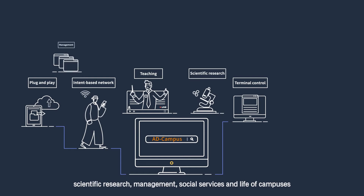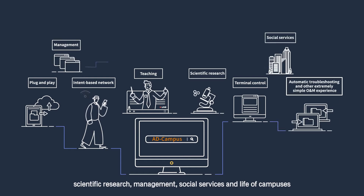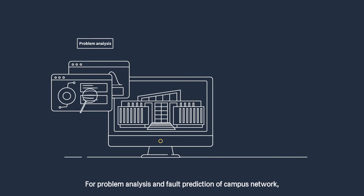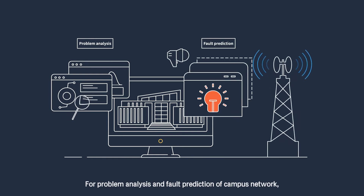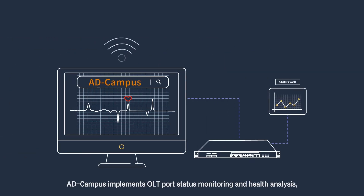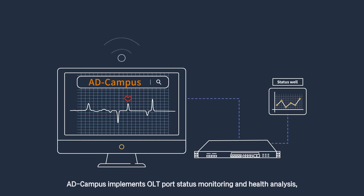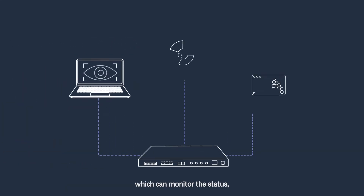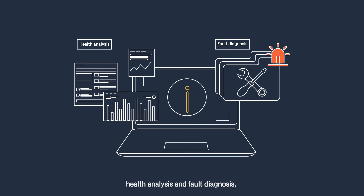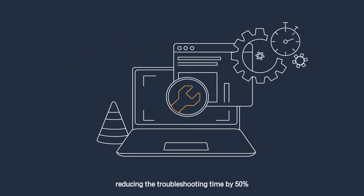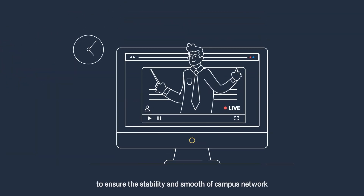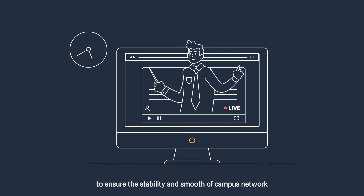This reduces the complexity of network O&M by 30%, comprehensively serving teaching, scientific research, management, social services, and campus life. For problem analysis and fault prediction of the campus network, AD Campus implements OLT port status monitoring and health analysis, which can monitor status, perform health analysis and fault diagnosis, reducing troubleshooting time by 50% to ensure the stability and smoothness of the campus network.